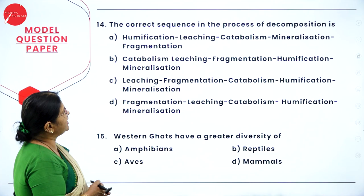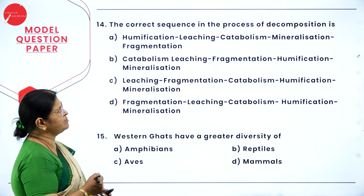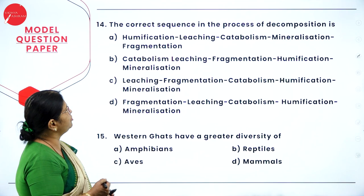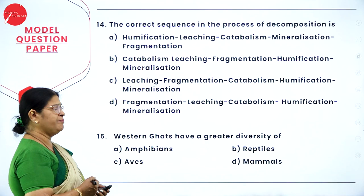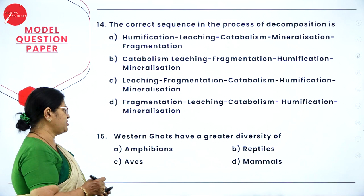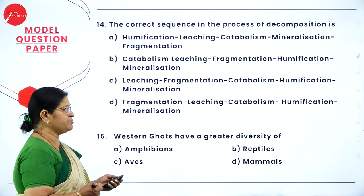Question 14: the correct sequence in the process of decomposition is — Option D: fragmentation, leaching, catabolism, humification, mineralization. Question 15 (last MCQ): Western Ghats have a greater diversity of — A: amphibians; B: reptiles; C: apes; D: mammals. I will explain solutions for all MCQs in the coming slides; I am just discussing the type of model question paper.